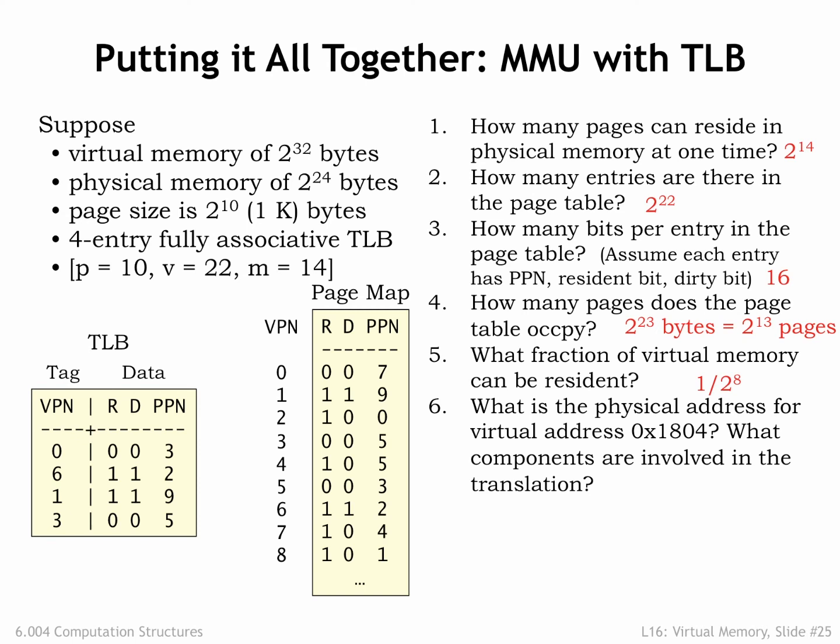What is the physical address for virtual address 0x1804? Which MMU components are involved in the translation? First we have to decompose the virtual address into VPN and offset. The offset is the low-order 10 bits, so 0x4 in this example. The VPN is the remaining address bits, so the VPN is 6. Looking first in the TLB, we see that the VPN to PPN mapping for VPN 6 is cached, so we can construct the physical address by concatenating the PPN with the 10-bit offset 4 to get a physical address of 0x804.